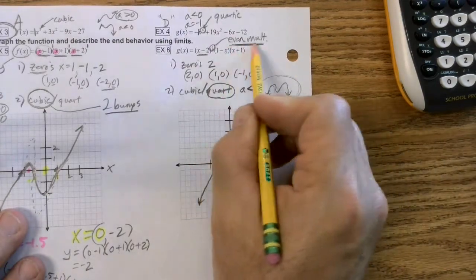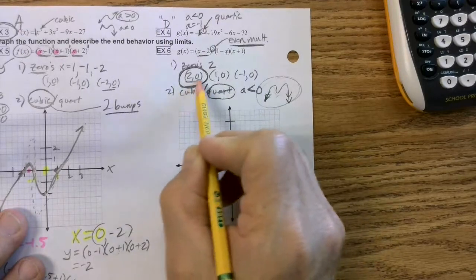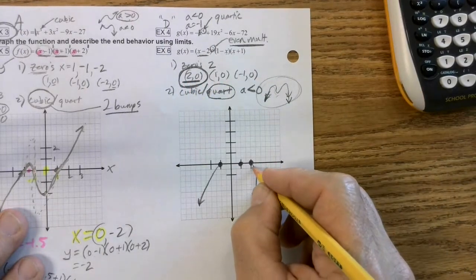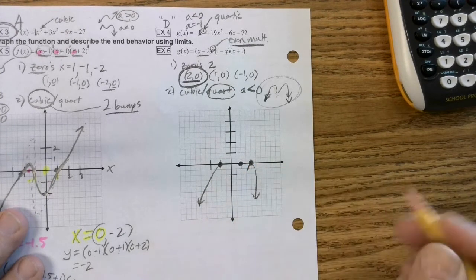Remember the even multiplicity applied to this zero, which means it's going to bounce off the zero, which means it goes up, it doesn't go through, and it goes down.